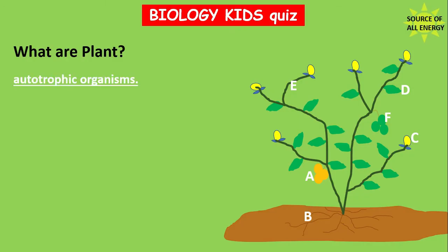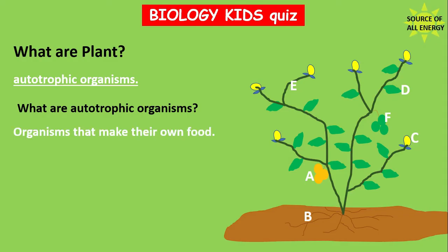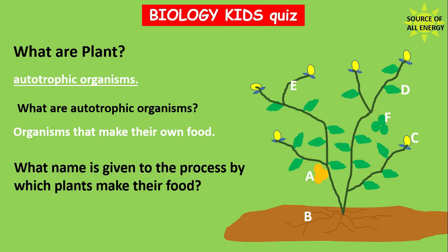Plants are autotrophic organisms. What are autotrophic organisms? Write it in your books. They are organisms that make their own food. Did you know that? All organisms that make their own food are called autotrophs.